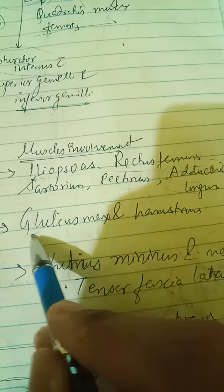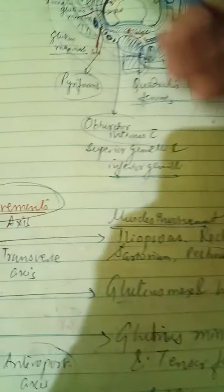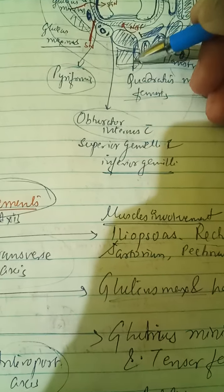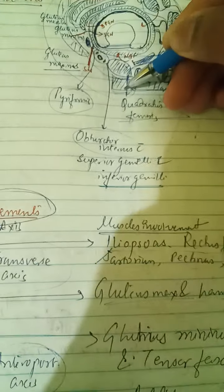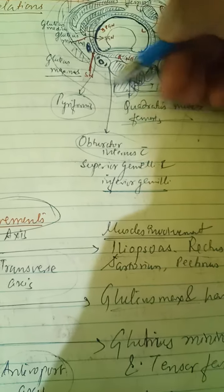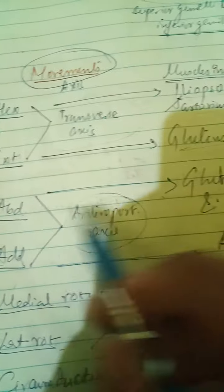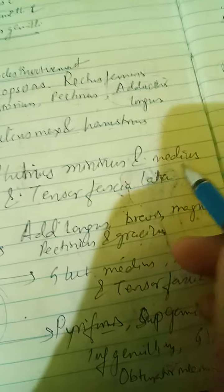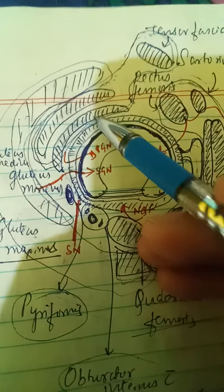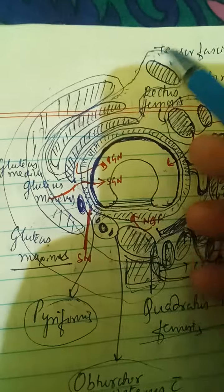Extension is performed by the posterior group of muscles — the gluteus maximus and the hamstring muscles. Abduction is caused by gluteus medius, gluteus minimus, and tensor fasciae latae.